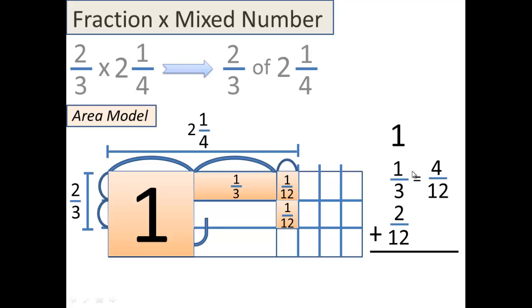Yeah, I was thinking 12ths as well. You could do 3 times 4, and then do the same to the bottom as you do to the top, 1 times 4, and you've created an equivalent fraction, and now we can add these up. What's one whole plus 4/12 plus 2/12?